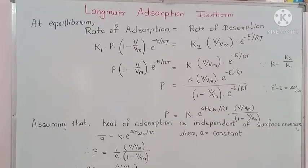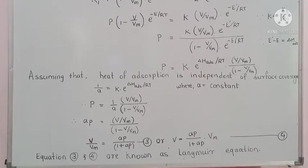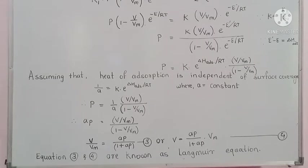Assuming that the heat of adsorption is independent of surface coverage, we define a constant A where 1/A = k × e^(ΔH_ads/RT). Substituting this into the equation gives P = (1/A) × (V/Vm) / (1 − V/Vm). After rearranging, we get V/Vm = AP / (1 + AP).